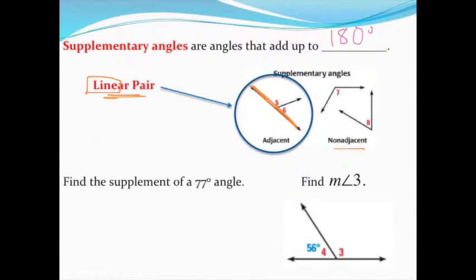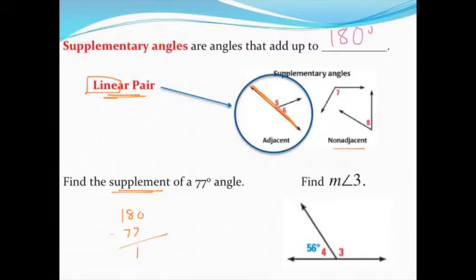When the question asks you to find the supplement of a 77-degree angle, remember that supplement means they have to add up to 180. So we'll do 180 minus the angle we have and come up with a missing angle of 103 degrees.